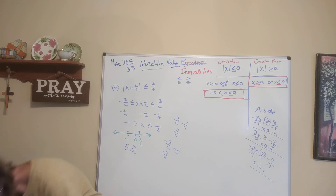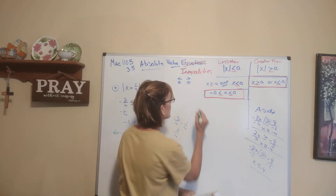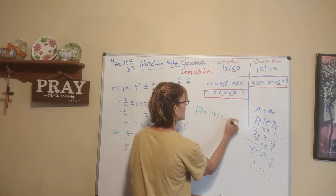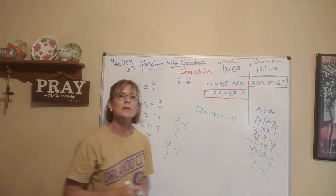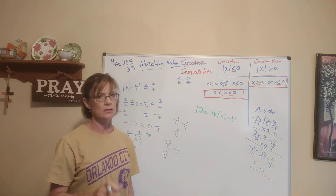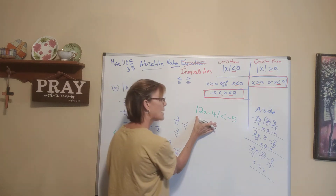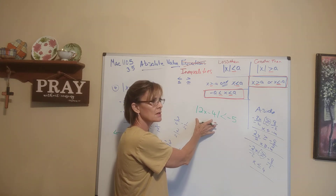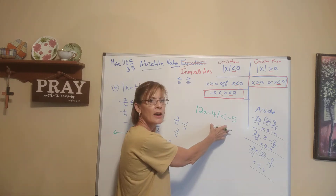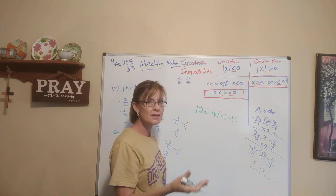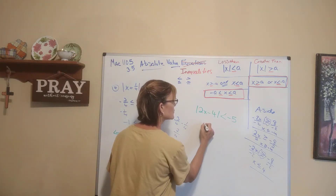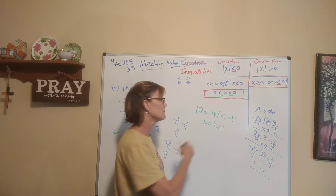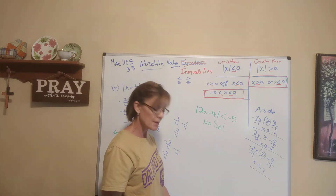Let me discuss a couple of things that could happen. You could be given: the absolute value of 2x minus 4 is less than negative 5. The solution to this is no solution — because an absolute value is a distance, and there's no distance that is negative 5. It's always going to be 0 or some positive number.